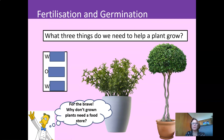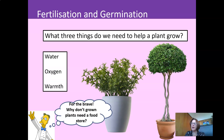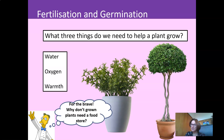Just a quick recap: what three things do we need to help a plant grow? We need water, oxygen, and warmth. And for the brave ones — why don't grown plants need a food store? They photosynthesize. Photosynthesis allows them to make their own food, which you would have gone into in detail last year in Grade 6.